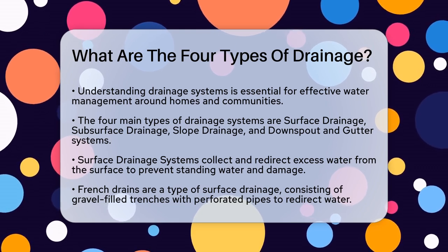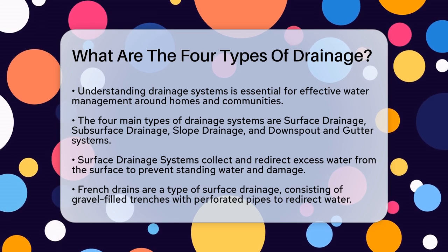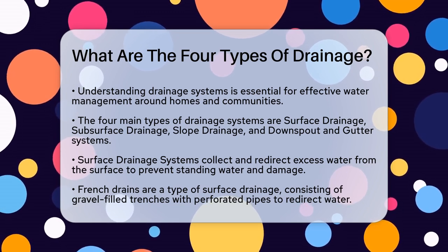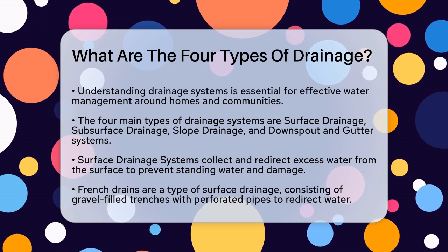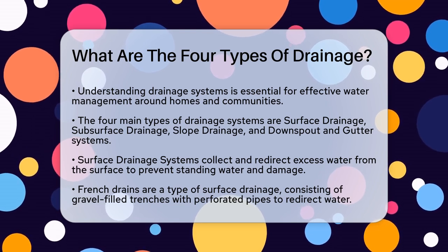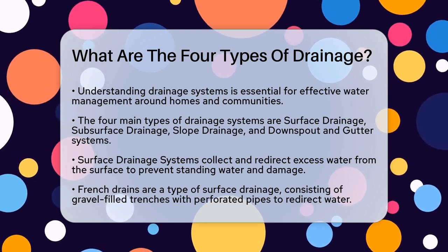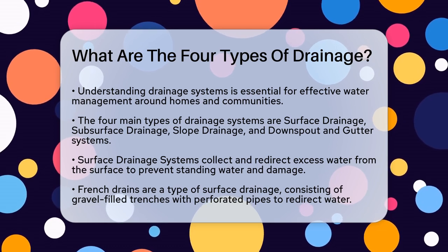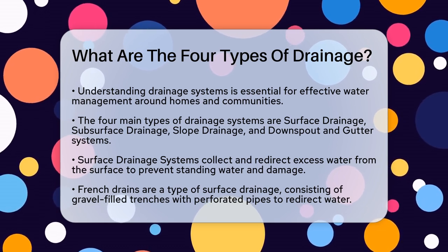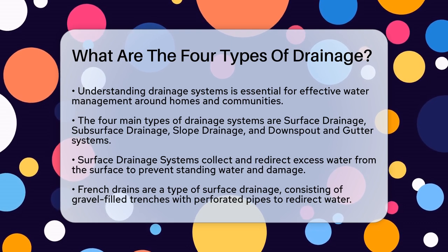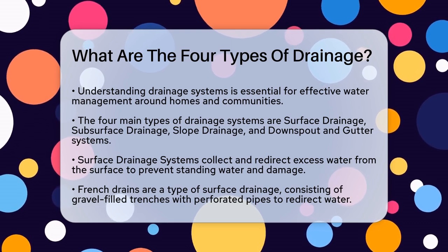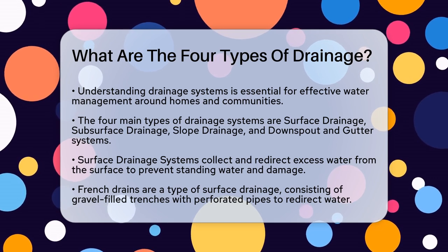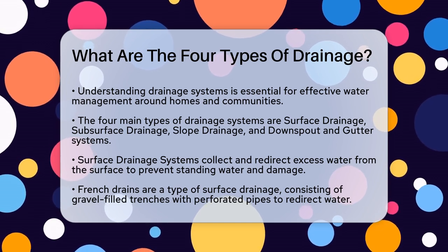First, there's the surface drainage system. This type is all about collecting and redirecting excess water from the surface. Imagine heavy rainfall or water running off from paved areas like roads and parking lots. Surface drainage systems prevent standing water and potential damage to structures and landscapes. Within this category, you have French drains, which are gravel or rock-filled trenches with a perforated pipe to redirect water away from problem areas.